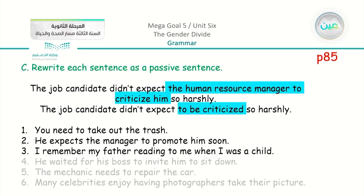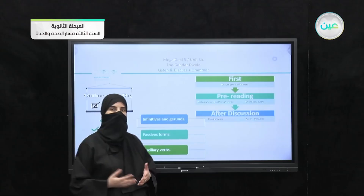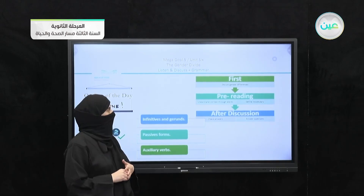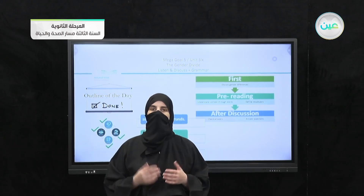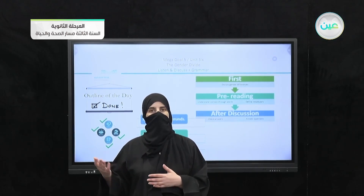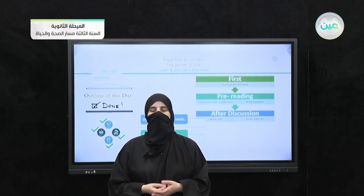You have exercises on page 85 with open answers. Our outline for today: we discussed gender differences, understood context through words and defined vocabulary, checked answers and answered comprehension questions. In the grammar part, we discussed infinitives and gerunds, turned them into passive forms, and used auxiliary verbs in sentences. Look at the exercises in the book — we will complete them in our next lesson, so be ready.